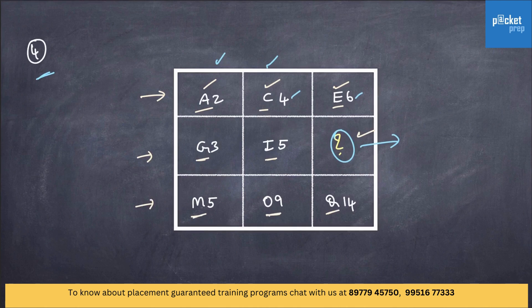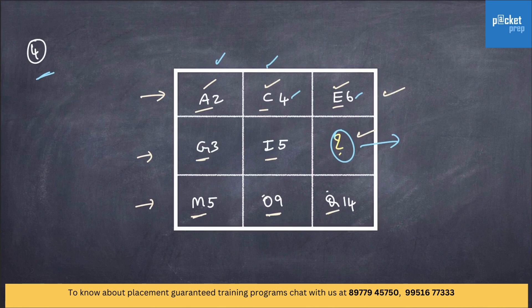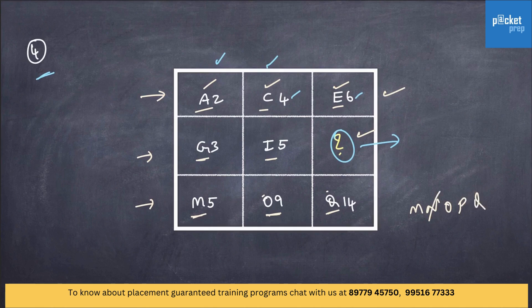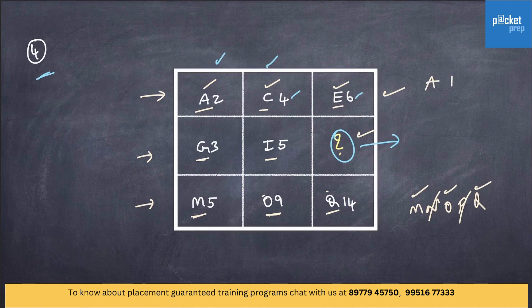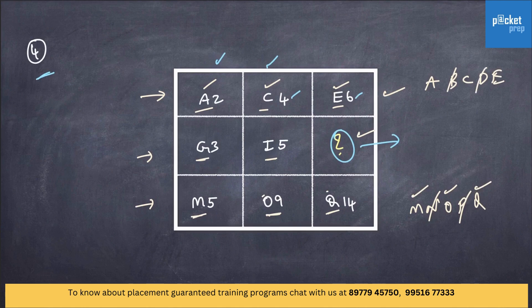M, O, Q. Like the first row, M, O, Q are alternate alphabets. M, N, O, P, Q. No N, no P. So, M, O, Q are alternate. Similarly, A, B, C, D, E. No B, no D. So, A, C, E are alternate alphabets.